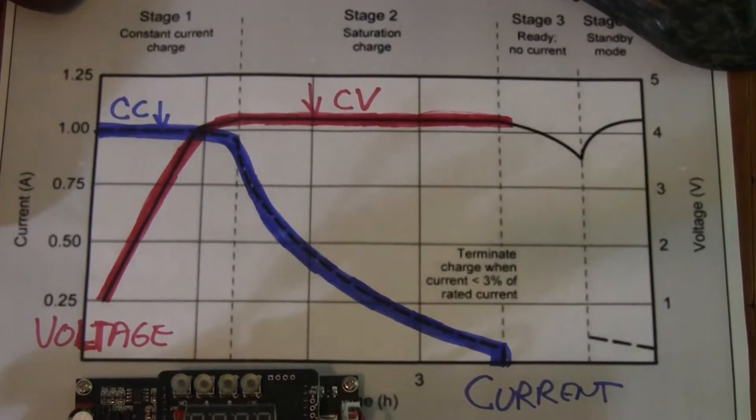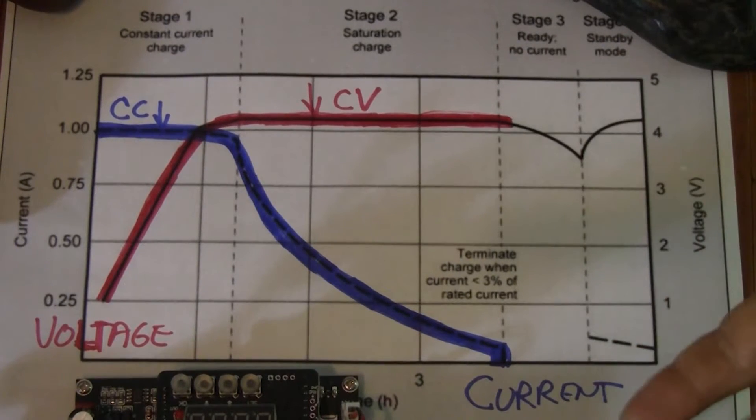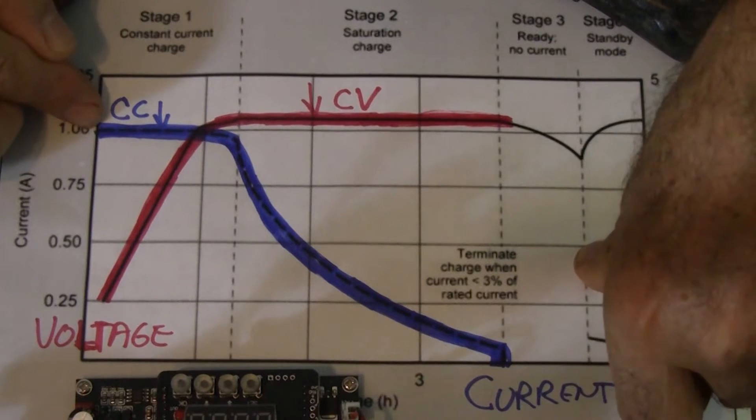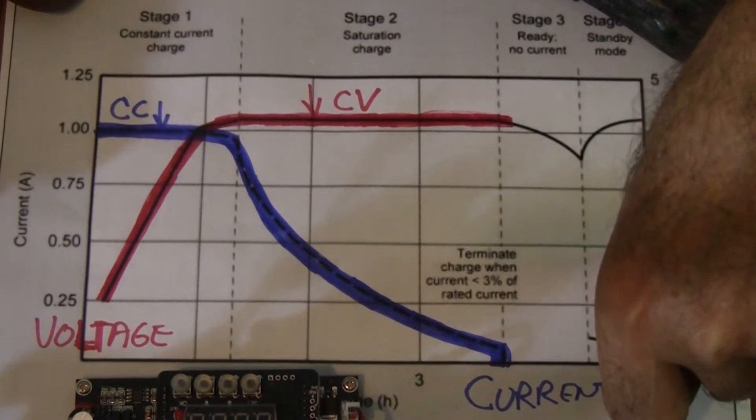Furthermore, it's a CCCV charger. What's CCCV mean and why is it important? Okay, I'll show you. All lithium ion and lead acid batteries charge on a CCCV charger. So what does that mean? Well, CCC stands for constant current and CV stands for constant voltage.